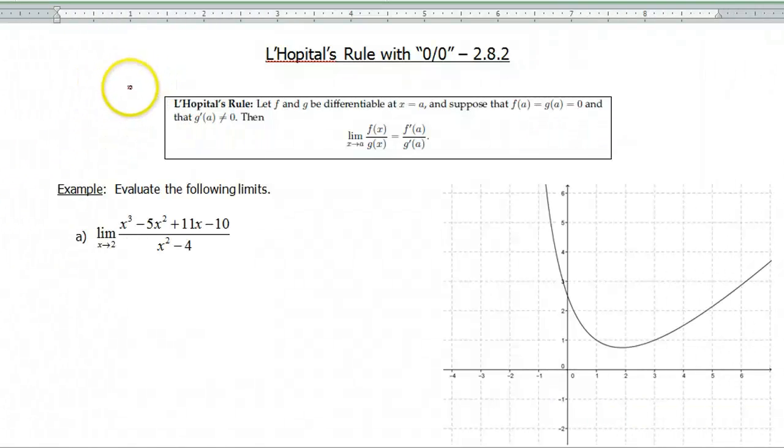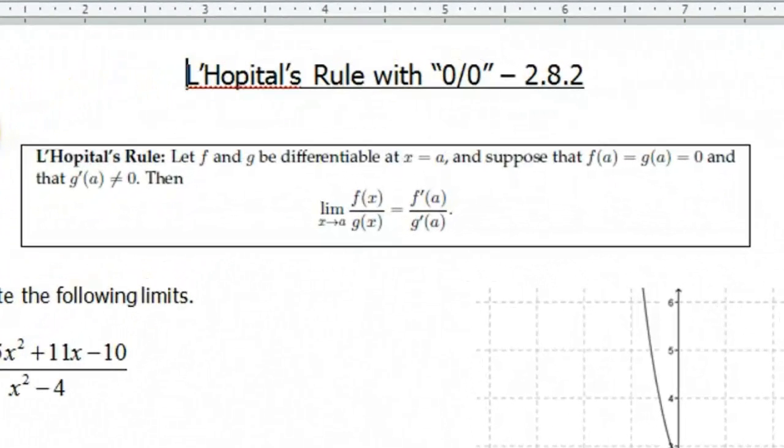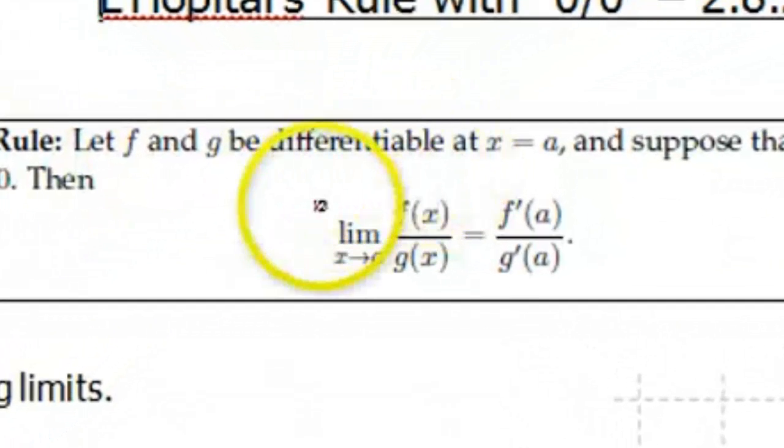Hello and welcome to a screencast about L'Hopital's rule. L'Hopital's is a rule that says if f and g are differentiable functions at a certain point, let's call it x equals a, and we know that f of a and g of a are both 0, and also g prime of a cannot be 0, then what L'Hopital's rule says is if you take the limit as x approaches a of your functions, that's the same thing as your derivatives evaluated at that point. It's also the same thing as the limit as x approaches a of your derivatives, assuming everything is continuous.